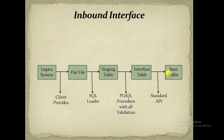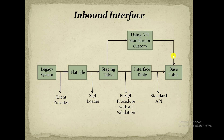In some cases we don't have an interface table — Oracle doesn't give us an interface table. In that case we directly have to insert the data from the staging table to the base table. For this we have some standard APIs or we have to build custom APIs ourselves. We transfer the data directly from the staging table to the base table. This second approach is rarely used.